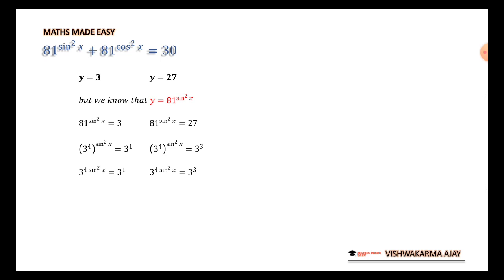So, we have like this. 3 raised to 4 instead of 81, sin square x is equal to 3 raised to 1. 3 raised to 4 instead of 81, sin square x, 3 raised to 3 for 27. Now, this can also be written as 3 raised to 4 sin square x is equal to 3. 3 raised to 4 sin square x is equal to 3 raised to 3.